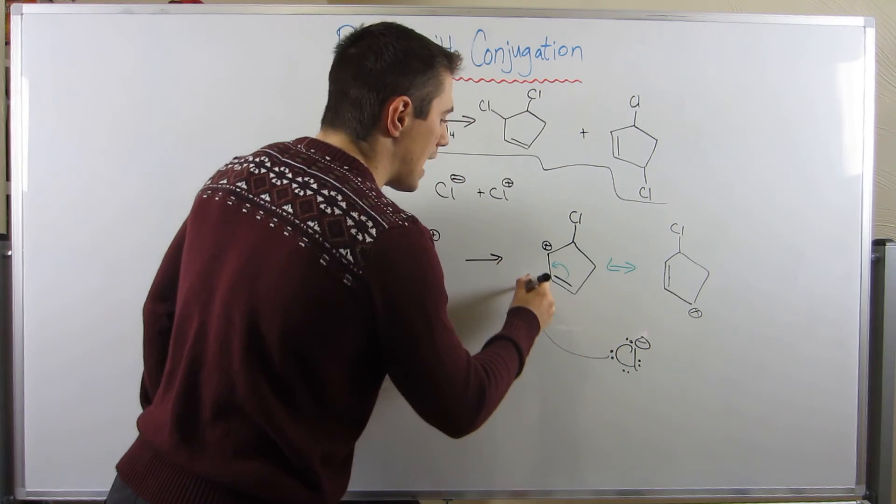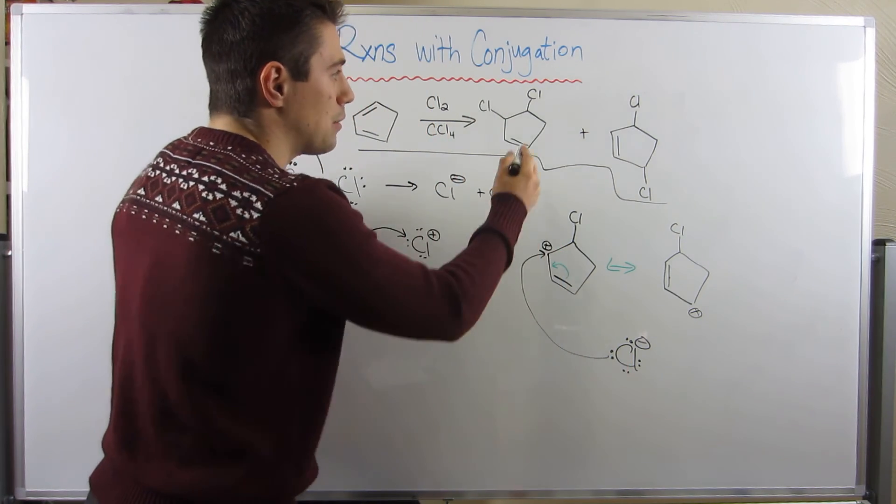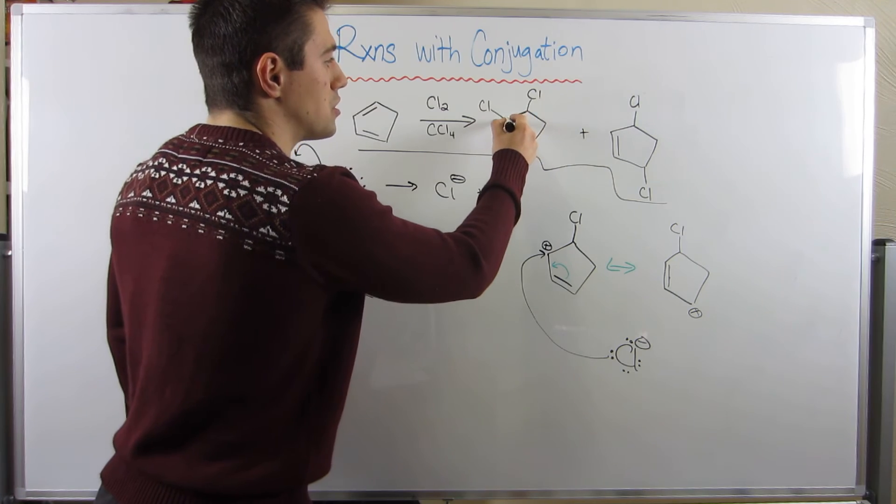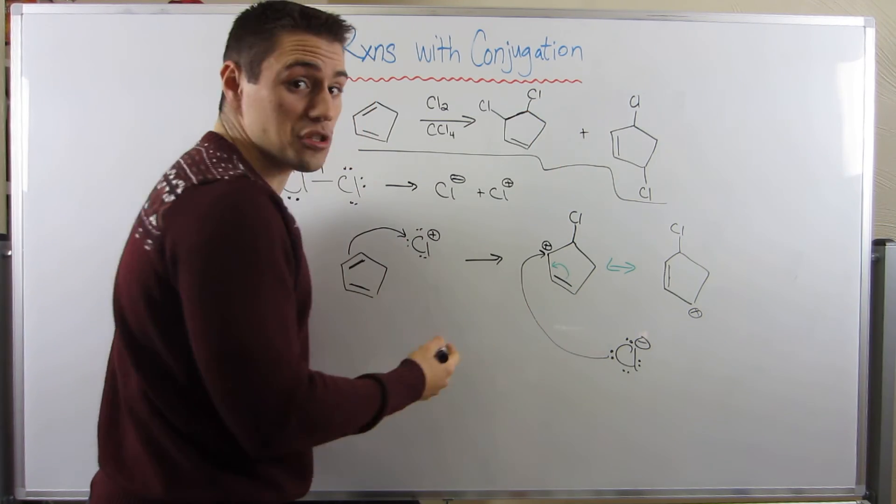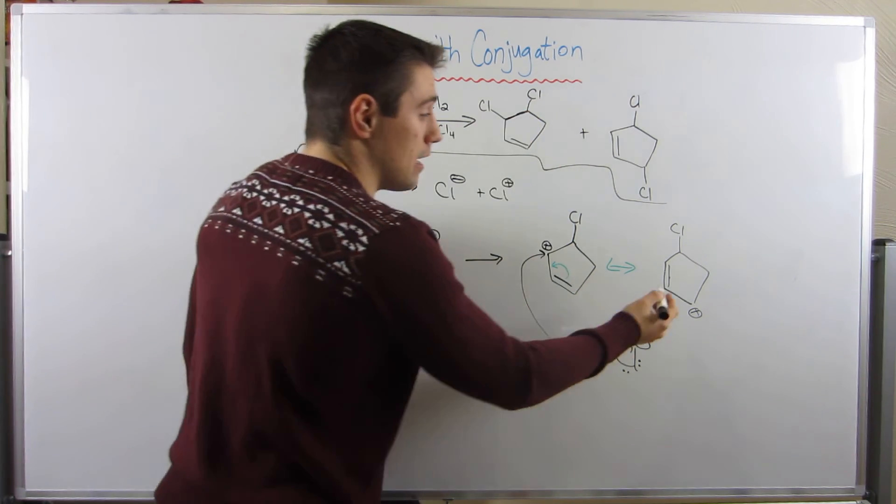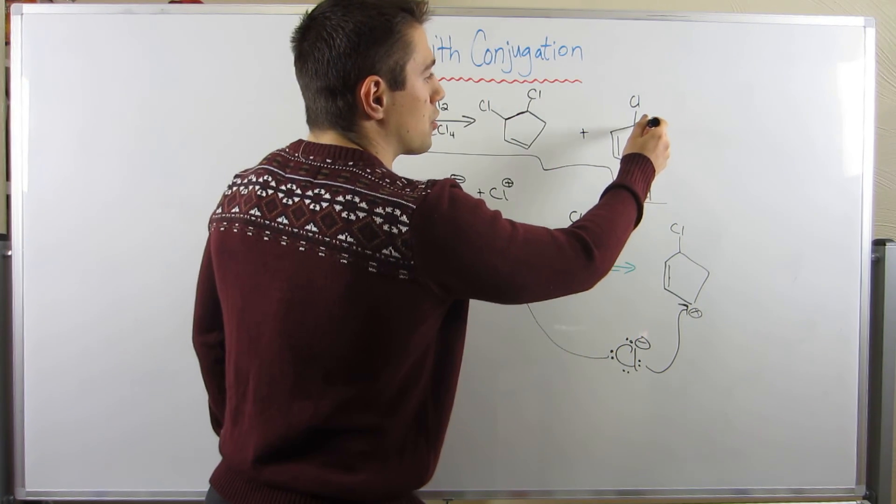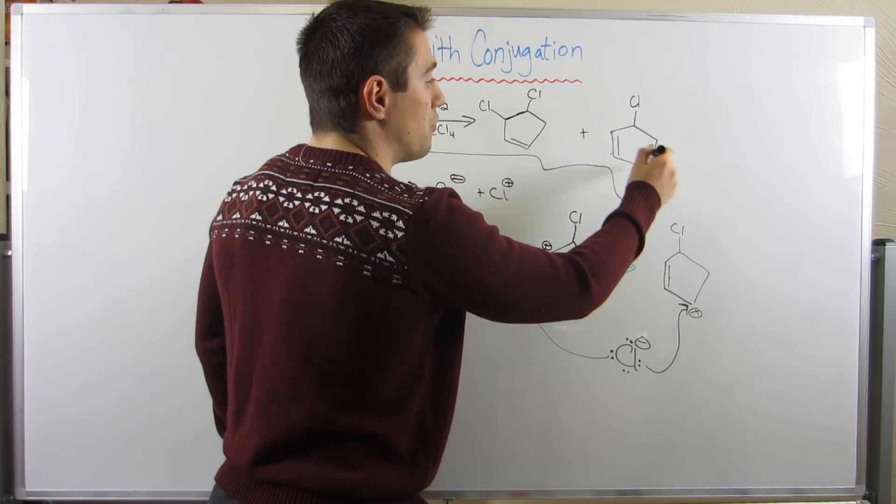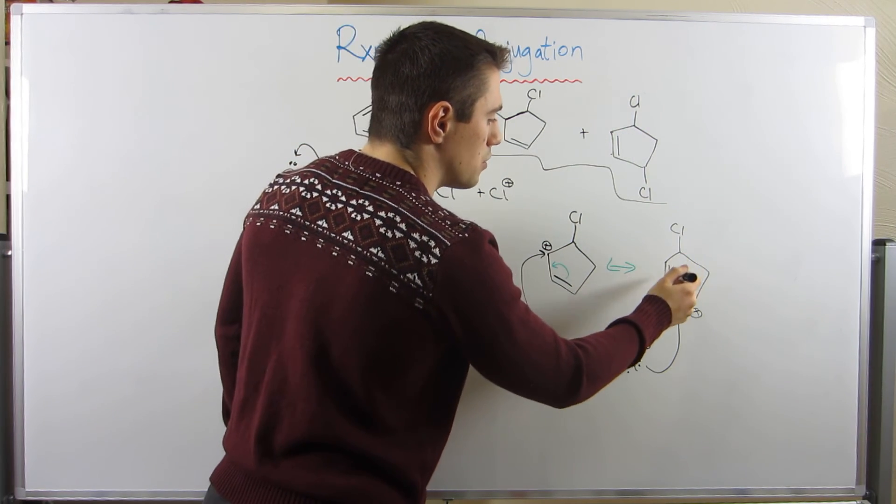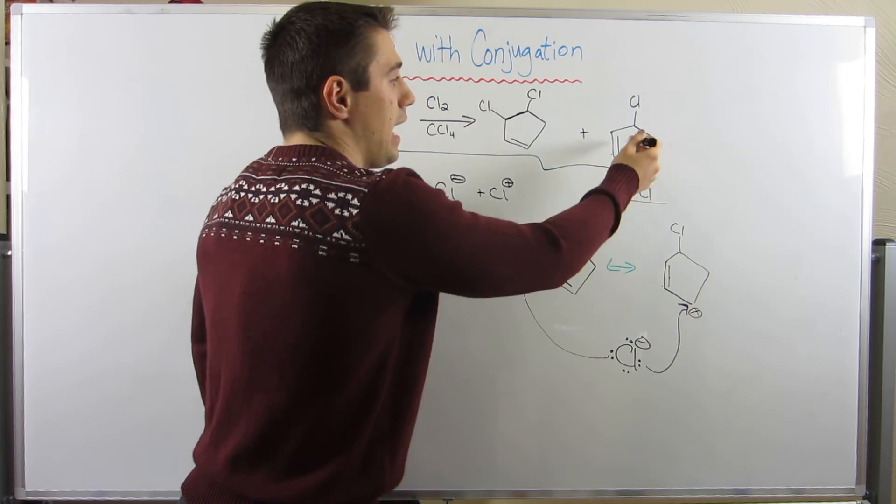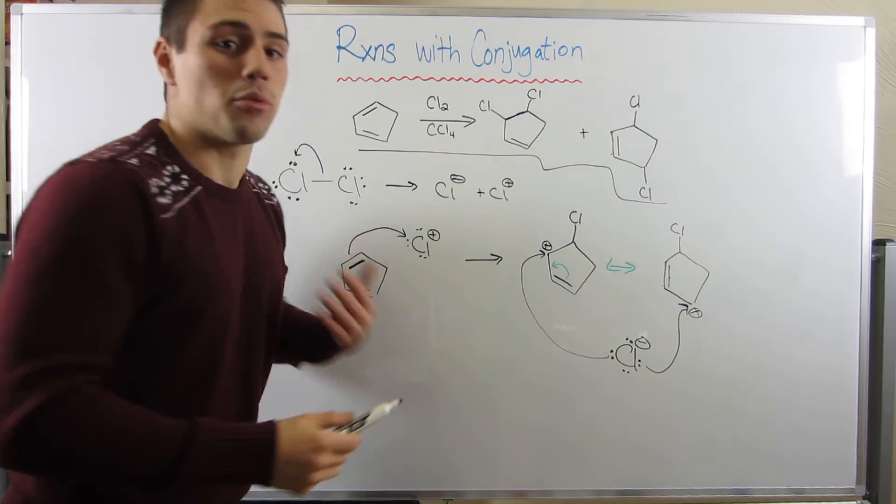Because over here, we would attack at that position. That would give us the chlorines next door to each other and the double bond in the position that it is. However, in the other scenario, we attack this carbocation. And you can see we have the chlorine spaced out one, two, three, four positions away. One, two, three, four positions away. And the double bond is exactly where we'd expect it.